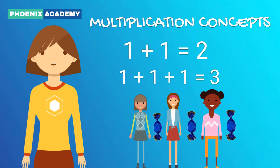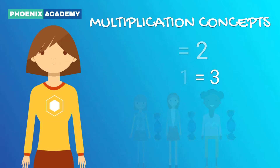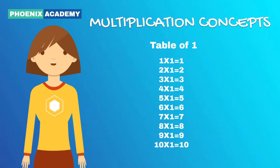Are you able to see any pattern here? Let's see it carefully. You have 1 candy in your hand, so I can say 1 times 1 equals 1. You and your first friend have together 2 candies, so I can say 2 times 1 equals 2.